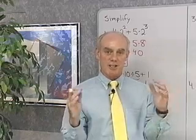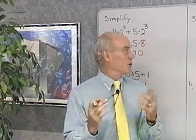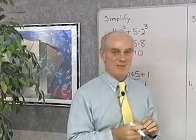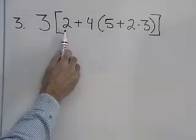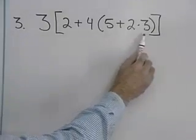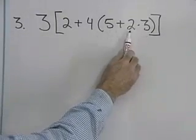Where we start is inside the innermost parentheses first, and we'll get some practice with that with our next example. Problem number 3, we want to simplify 3 times this quantity, 2 plus 4 times, and then inside the parentheses here, 5 plus 2 times 3.